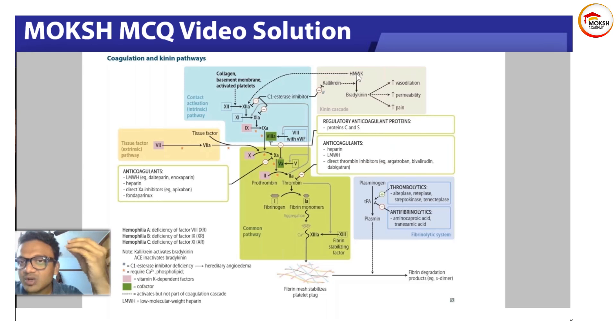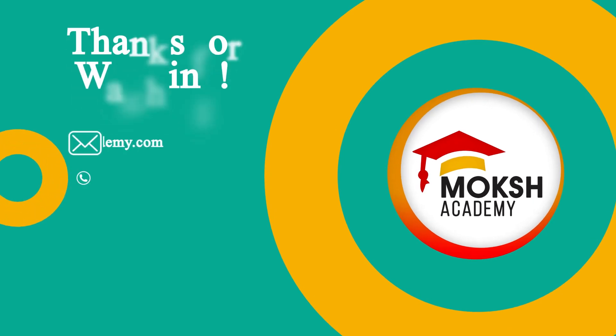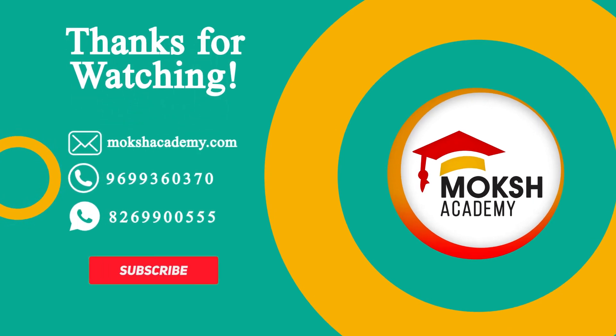So kallikrein will cause high molecular weight kininogen and also low molecular weight kininogen to convert into bradykinin. This will cause vasodilation, permeability, and pain. So they're asking what is this thing - high molecular weight kininogen. The answer is D. Got it? Thanks for watching, please give a thumbs up and subscribe for more.